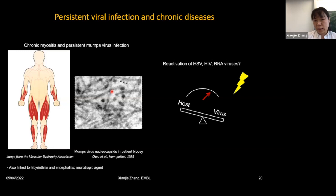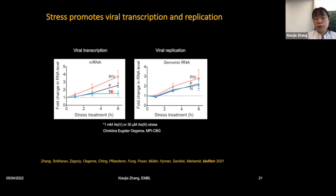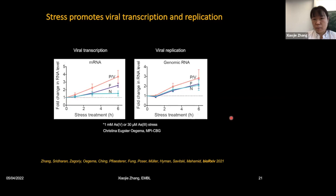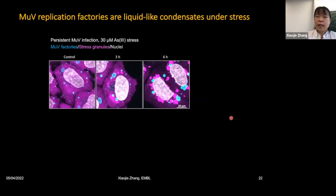We investigated stress-induced reactivation and the underlying molecular mechanisms. We carried out quantification of viral mRNA and genomic RNA by quantitative PCR. Interestingly, along the time course of stress treatment, there was a clear increase in viral transcription and replication inside these cells — confirming that stress can indeed induce reactivation of the virus from a persistent infection state. Looking at viral replication factories by immunofluorescence microscopy along the stress time course, we observed both assembly of stress granules (magenta) and changes in the viral factories (cyan), which in many cases existed in close proximity to stress granules.